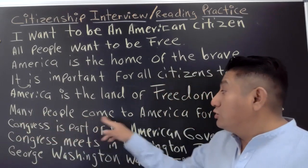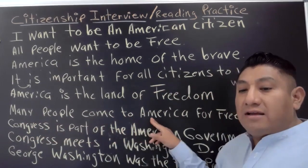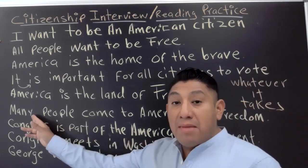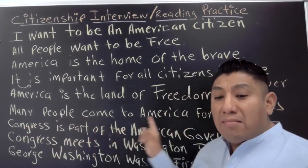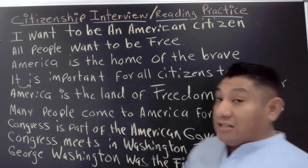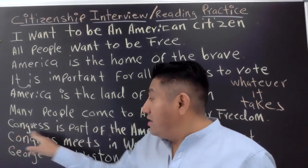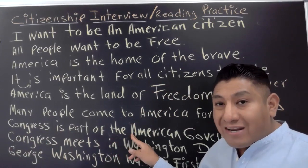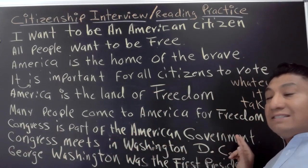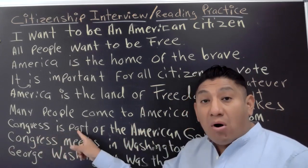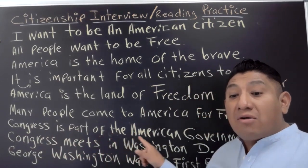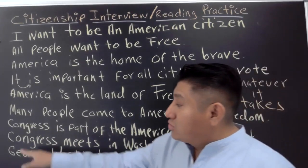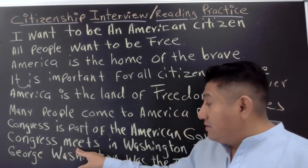Number six: 'Many people come to America for freedom.' Many people come to America for freedom. Number seven: 'Congress is part of the American government.' Congress is part of the American government.